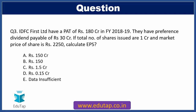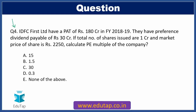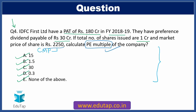Since the EPS is Rs. 150, option B is the correct answer for question 3. Now moving to question 4, which is an extension of question 3. The data remains the same: IDFC First Limited with PAT of Rs. 180 crore, preference dividend of Rs. 30 crore, total shares of 1 crore, and market price of Rs. 2250. We need to calculate the PE multiple — that is, the price to earning ratio — of the company. Options: A) 15, B) 1.5, C) 30, D) 0.3, E) None of the above. Like before, the market price of Rs. 2250 which we ignored in Q3 is now relevant.